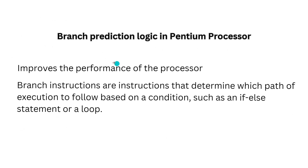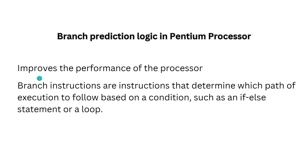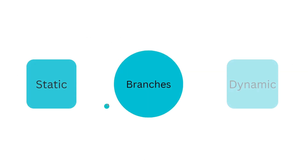Branch prediction is a feature in the Pentium processor that improves performance by predicting the outcome of a branch instruction before it is actually executed. Branch instructions determine which path of execution to follow based on a condition, such as an if-else statement or a loop. The Pentium processor uses a combination of two branch prediction techniques: static and dynamic prediction.